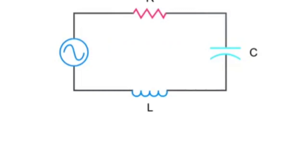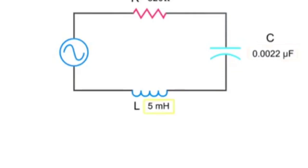In this circuit, there is an 820 ohm resistor, a capacitor of 0.0022 microfarads, and an inductor of 5 millihenries. The voltage source is 20 volts operating at a frequency of 40 kilohertz.